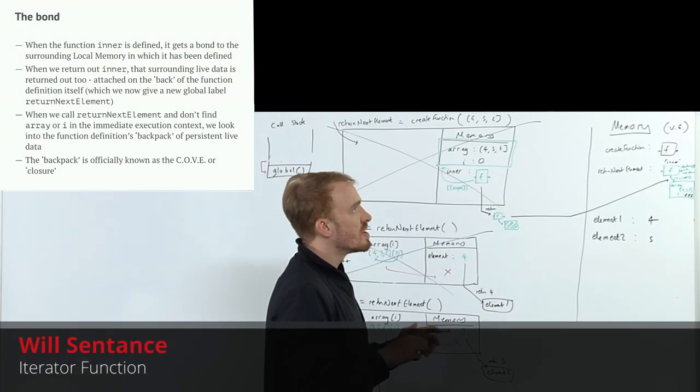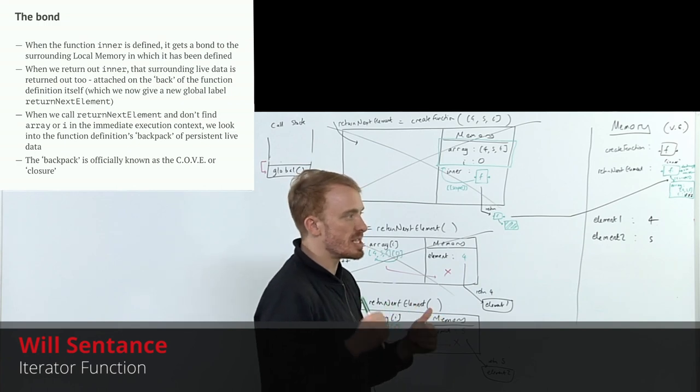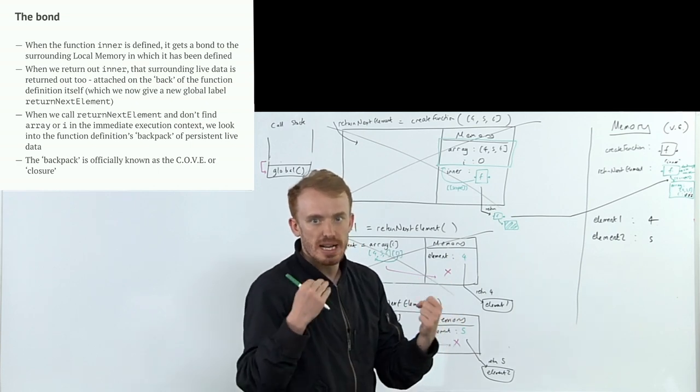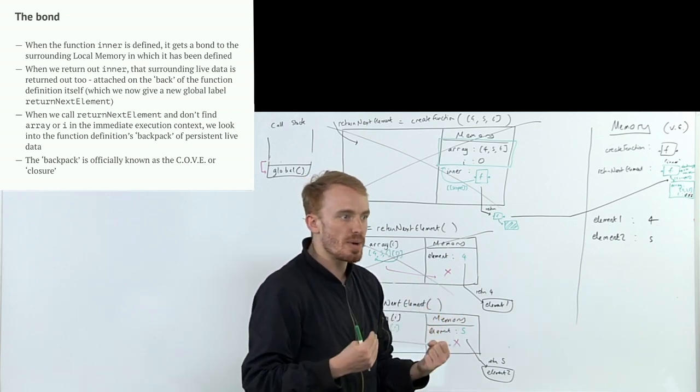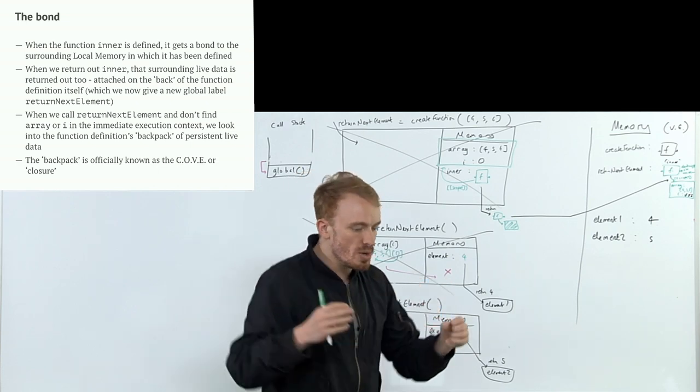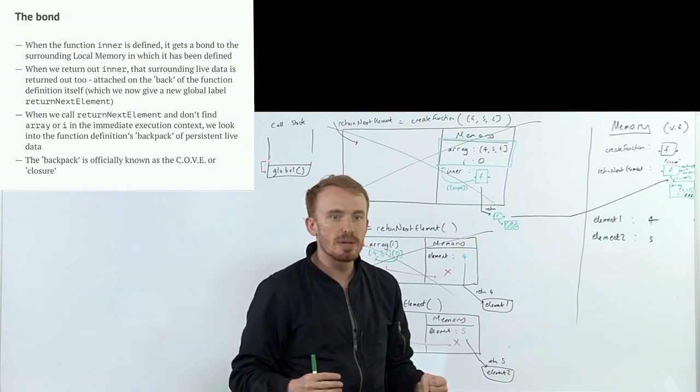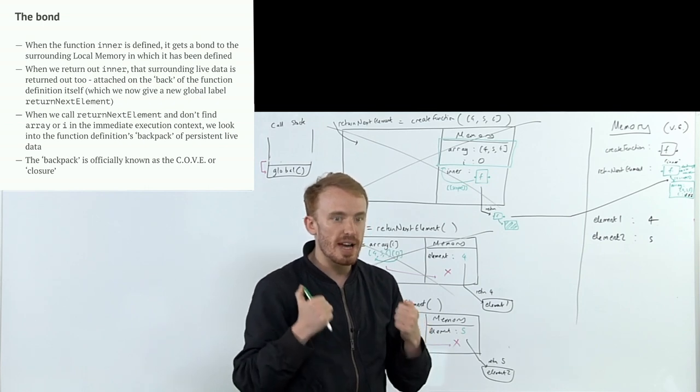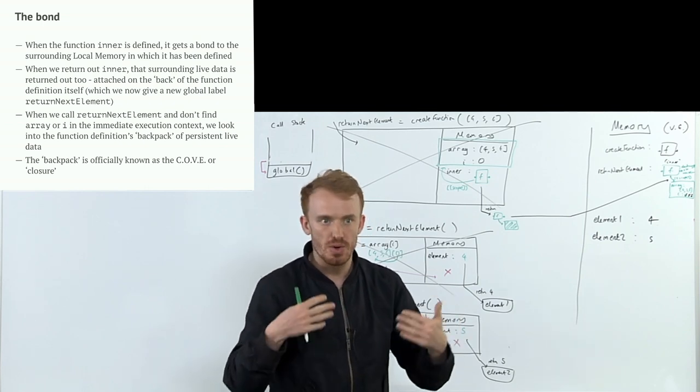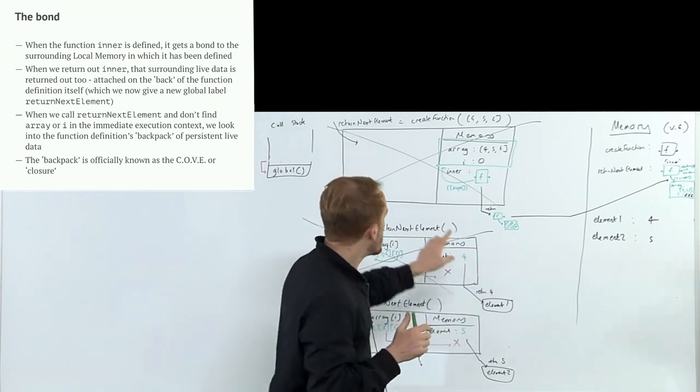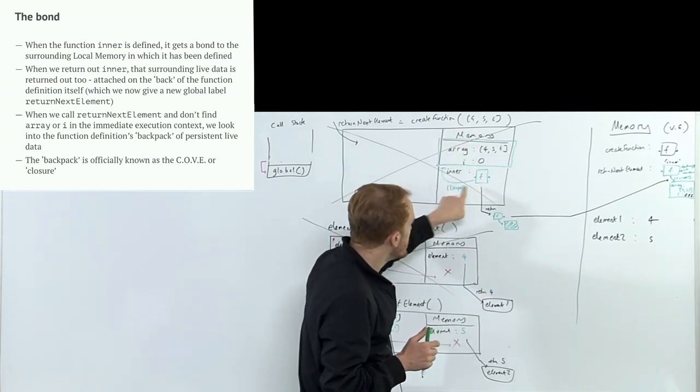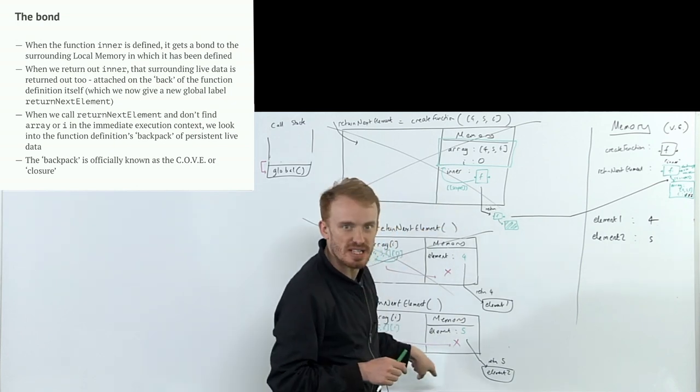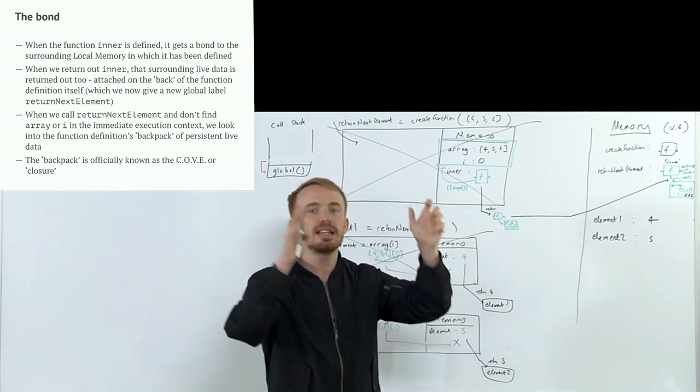A language whose rules about what data is available to you is about where the function was born, where it's defined, is known as a lexically scoped language. That means a language that says where you defined me is what determines - a positioning of my definition inside another function determines what data I have available when I'm eventually run, eventually called, wherever you end up calling me. Because I attach the data from around me when I was born to me, and that's the first place I look besides the function execution context itself. That is known as a lexically scoped language.